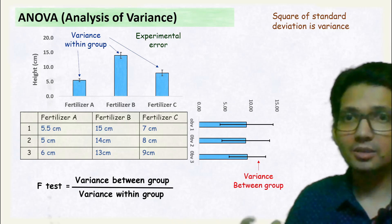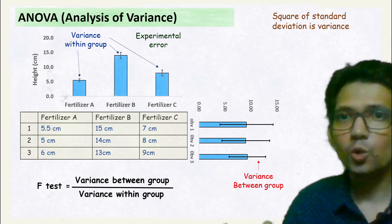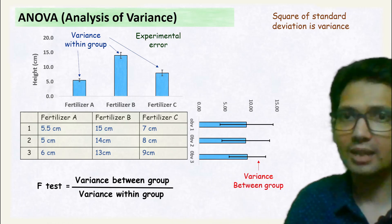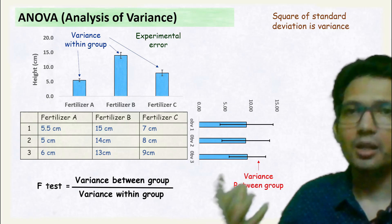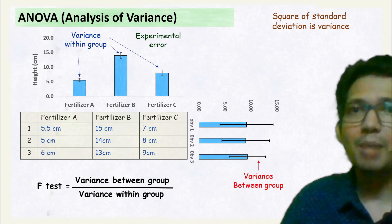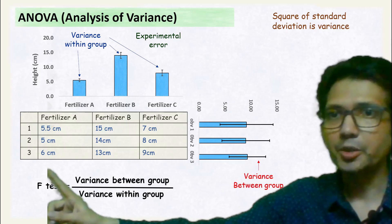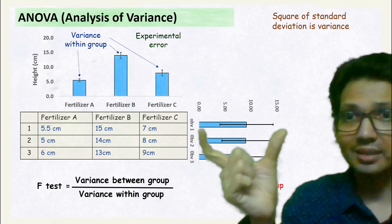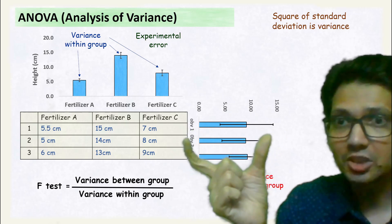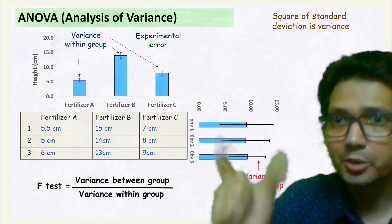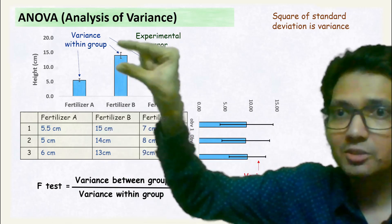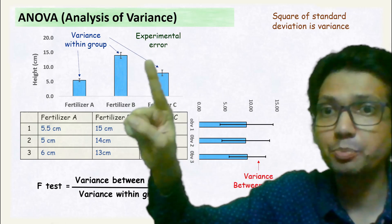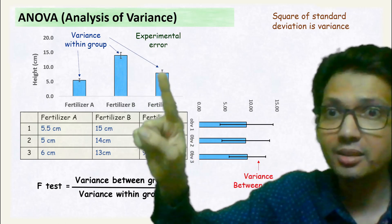So this is what ANOVA, or analysis of variance, does. Here we are comparing the variation due to each treatment with respect to the variation that is because of the experimental error.